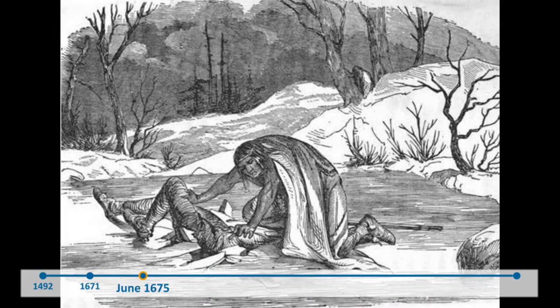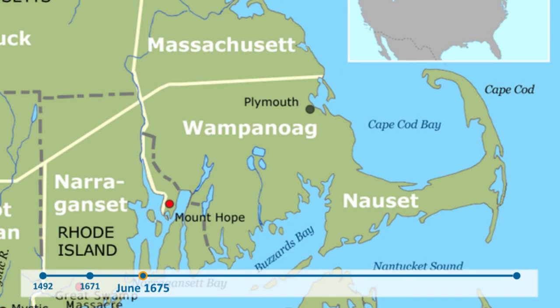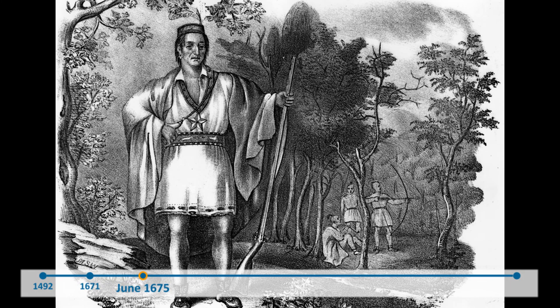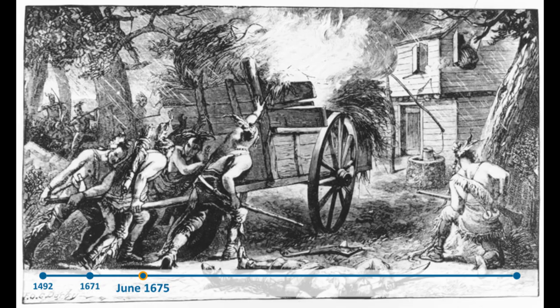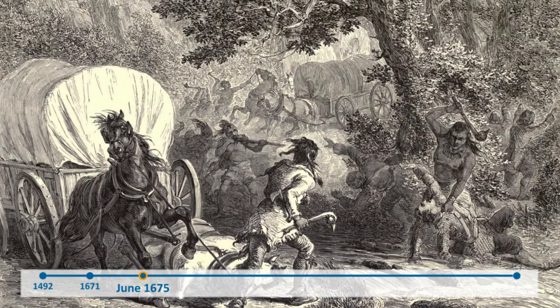Then, just four years later in 1675, three Wampanoag Indians were convicted and hung for murder in Plymouth Colony. The execution prompted outrage from the Wampanoags. Later that month, the Indians attacked a Plymouth Colony settlement in what would be known as the Raid on Swansea. For the first few months of the war, the colonists suffered heavily from the Indians' guerrilla-style warfare.